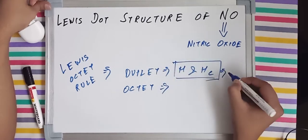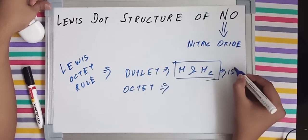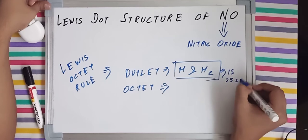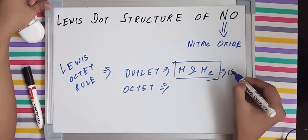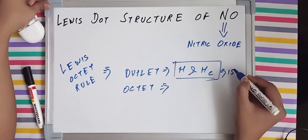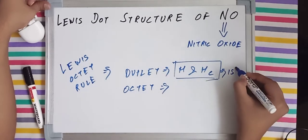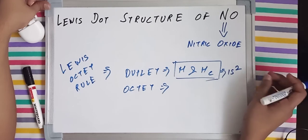They don't have 2s or 2p, nothing just 1s, and the maximum number of electrons which a 1s orbital in a 1s subshell will carry is just a maximum of 2 electrons.